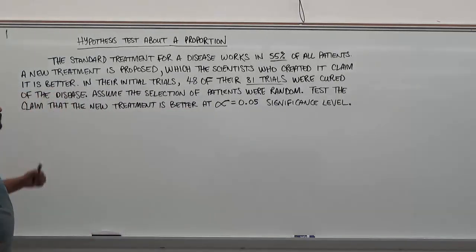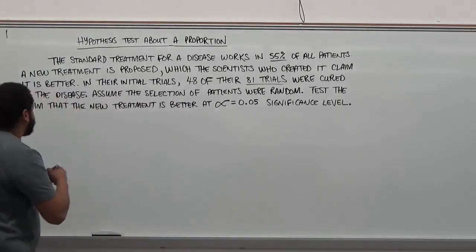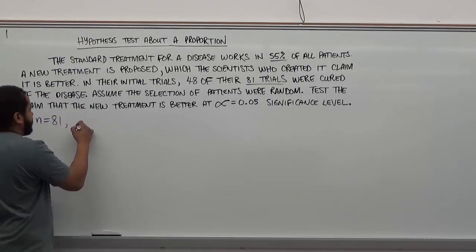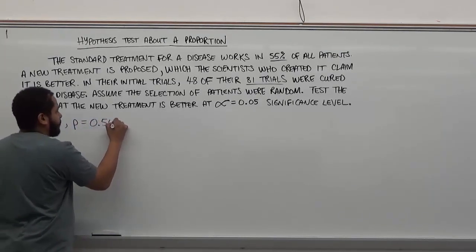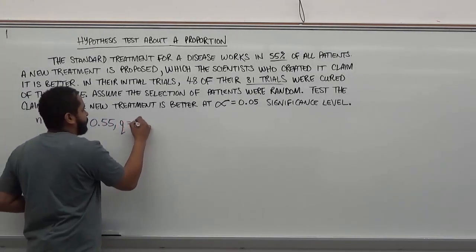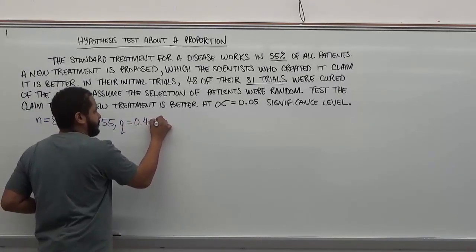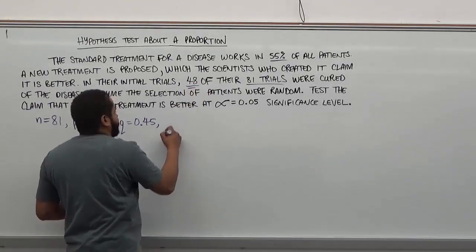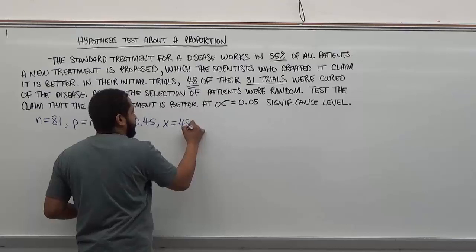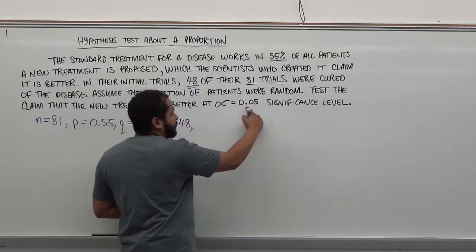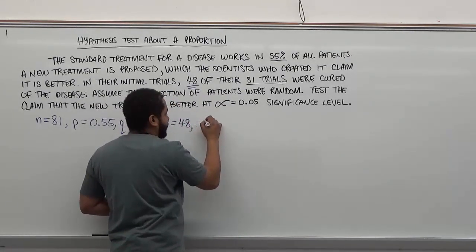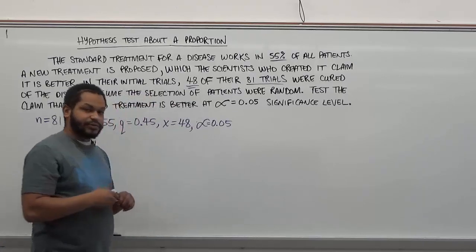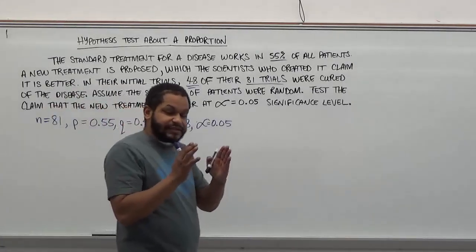Now let's note the values we know: n is 81, p is 0.55, q is 0.45, and the number of successful trials x is 48. We also have our alpha level of significance at 0.05, which represents the area of the tail of the critical region.